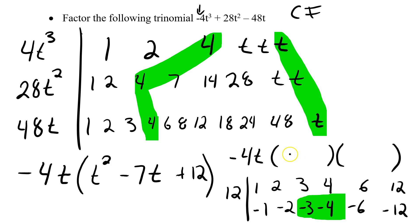So I'll put the negative, I'll split my t. I'll put the -3 in the first, -4 in the last, and there's my answer. -4t times (t - 3) times (t - 4).